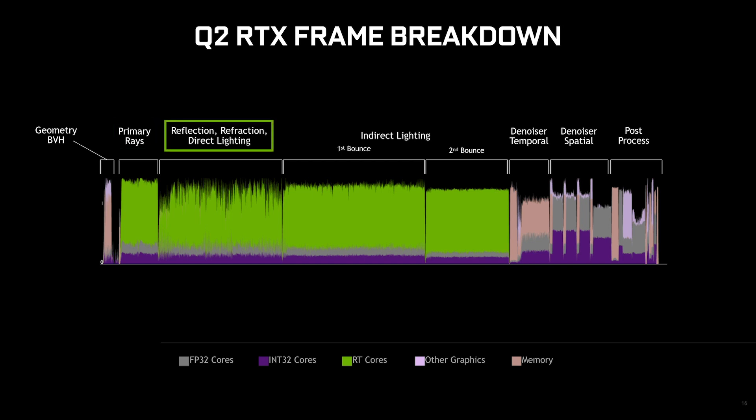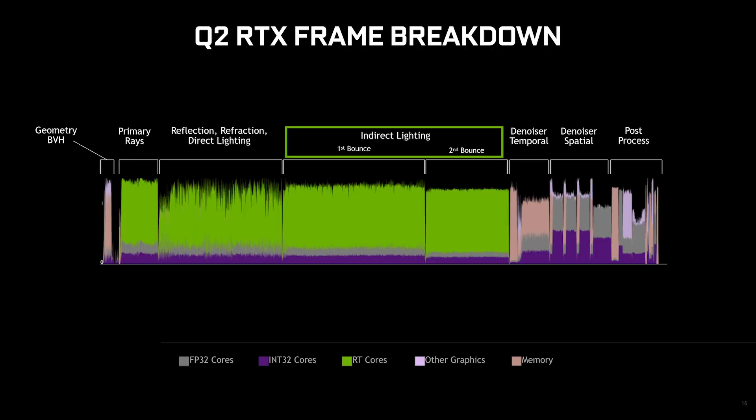After that, we move on to the direct light — reflections, refraction, and direct lighting — which is about 20% of the frame. After that, we move on to the indirect lighting calculations. The slides we just walked through were showing the first bounce, but there's an optional number of iterative bounces after that. Here we've captured a trace that has a second bounce, and the incremental cost is fairly expensive for that indirect lighting — in fact, it's about one third of the total frame time.